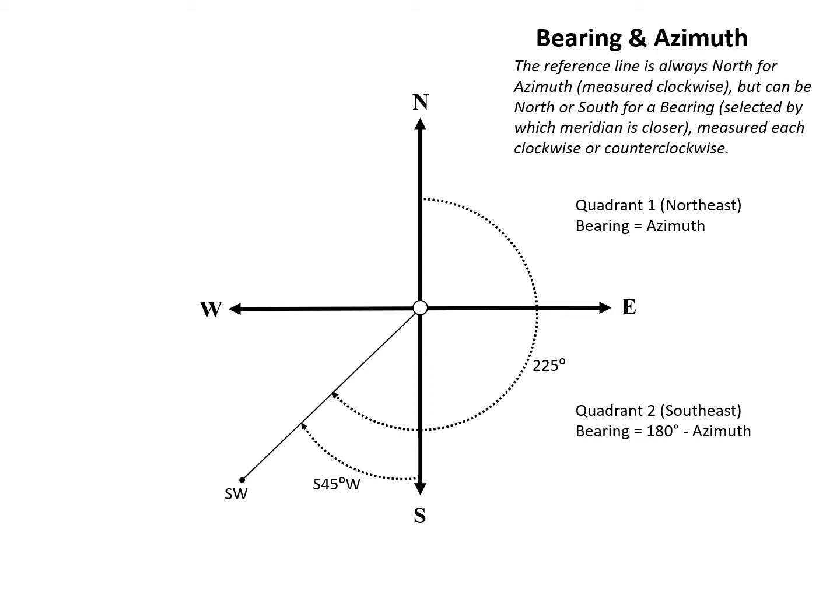In quadrant two, which is the southeast quadrant, the bearing is equal to 180 minus the azimuth.